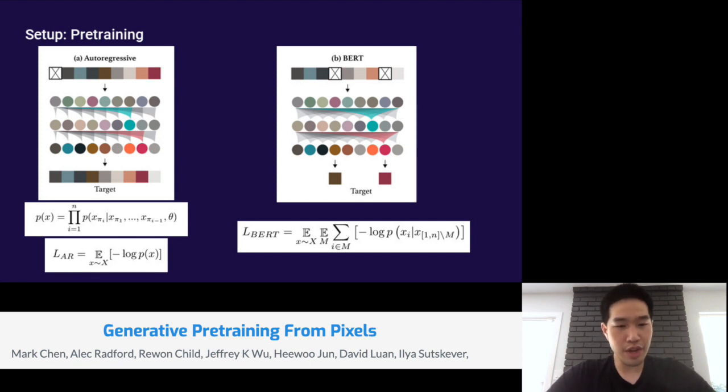It's worth noting here that the BERT model is permutation invariant, or that it has no positional inductive biases. Any spatial relationships between the pixels must be learned by the model at train time.